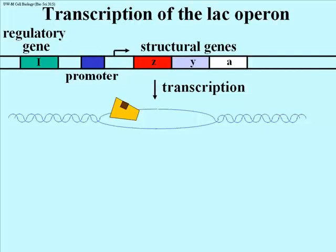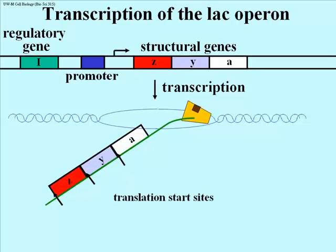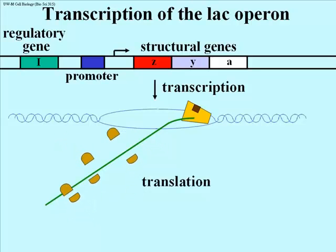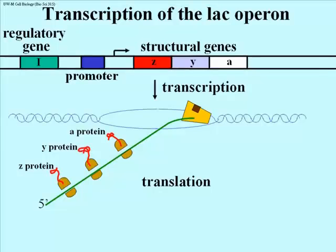Let's look at the transcription itself. It includes a few other components: the promoter, which is the sequence in front of the first of the three genes and is the binding site for RNA polymerase, and a regulatory gene historically called the i-gene. The lac operon transcript contains three translation start sites, so ribosomes will assemble at three different points on the mRNA and move along the message to translate the Z, Y, and A proteins.